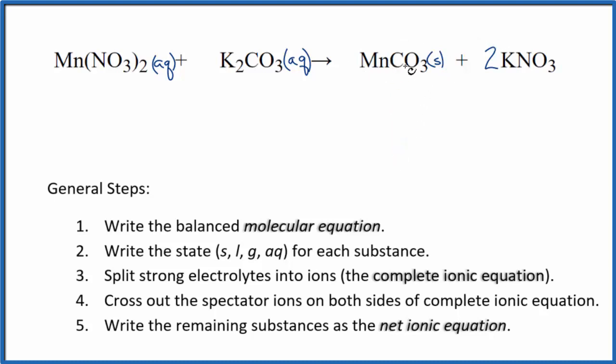So our MnCO3, manganese(II) carbonate, that's a precipitate. We have another nitrate compound, very soluble. These are the states for our net ionic equation.